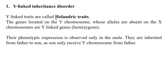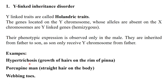Y-linked traits, also called holandric traits, involve genes located on the Y chromosome whose alleles are absent on the X chromosome. These are called hemizygous genes. Their phenotypic expression is observed only in males, inherited from father to son, since sons only receive the Y chromosome from their father. Examples of Y-linked inheritance include hypertrichosis (growth of hair on the rim of the pinna), porcupine-like straight hair on the body, and webbing of toes.